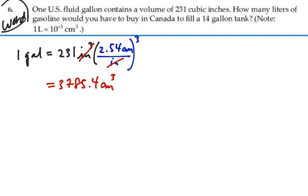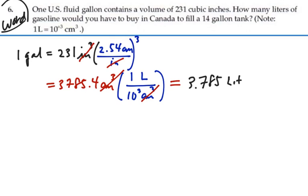Now let's convert that to liters. We know that there is one liter per 10 to the 3 cubic centimeters. The cubic centimeters will cancel out. And our answer then is 3.785 liters. So one gallon is equal to 3.785 liters in general.